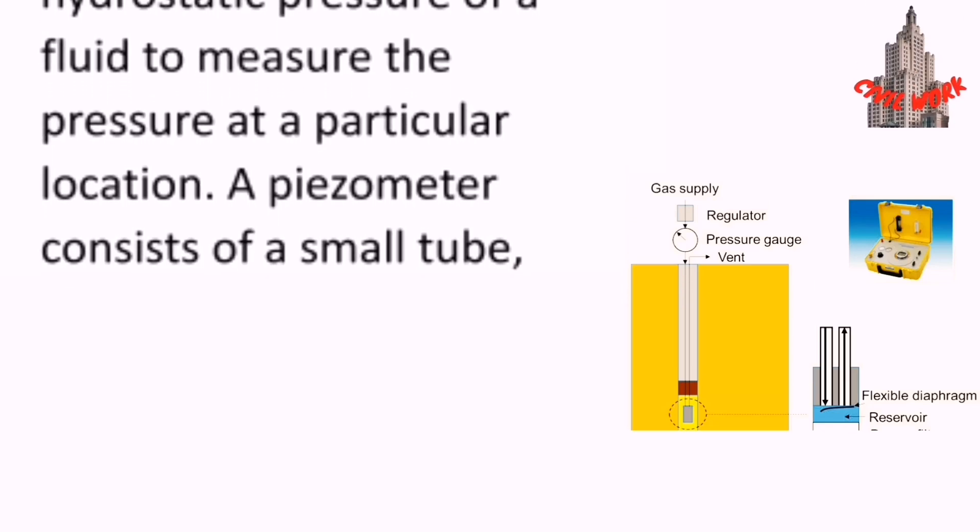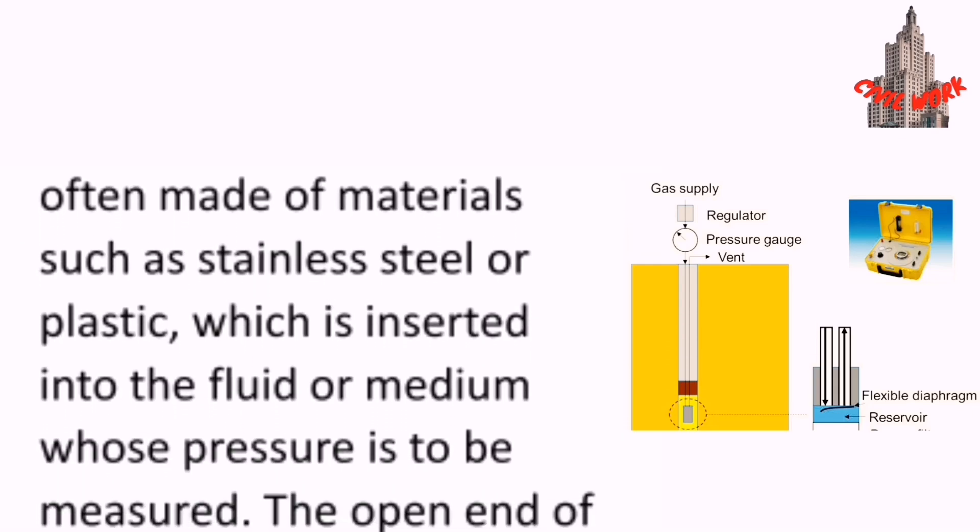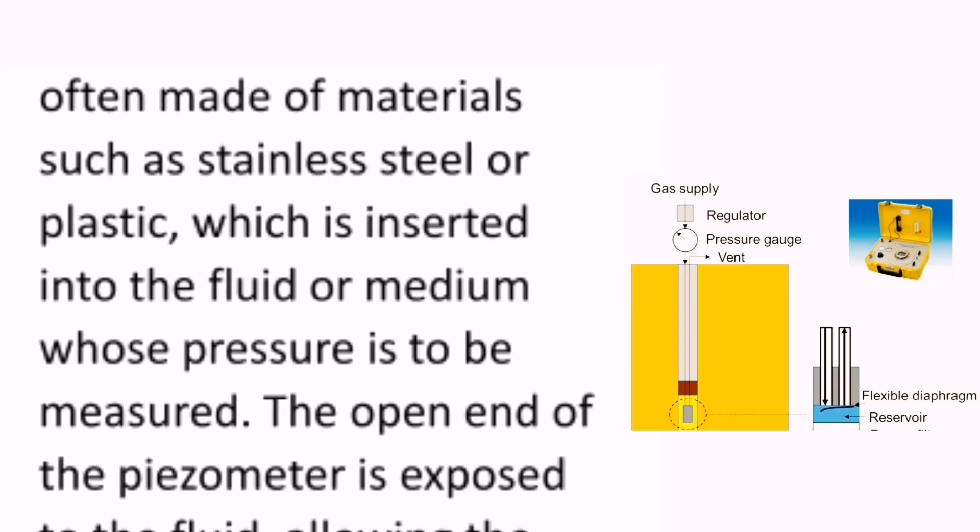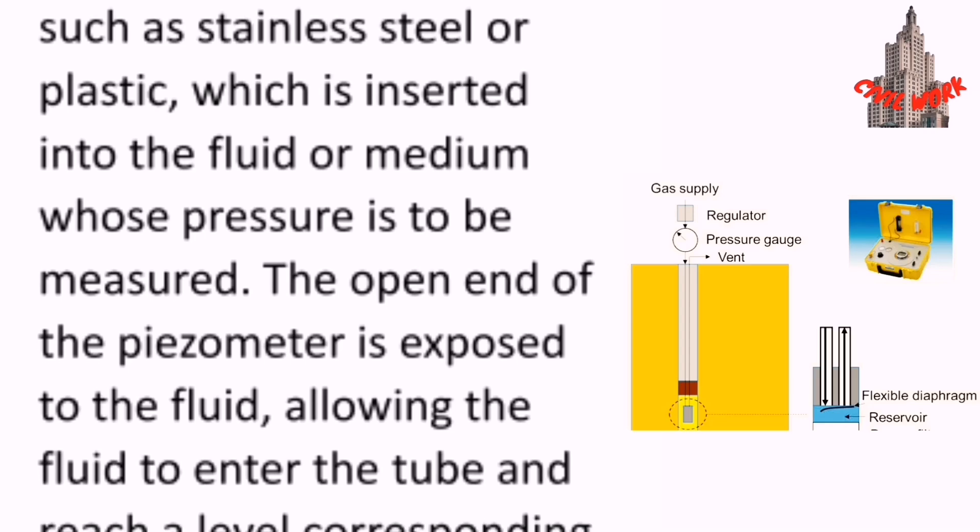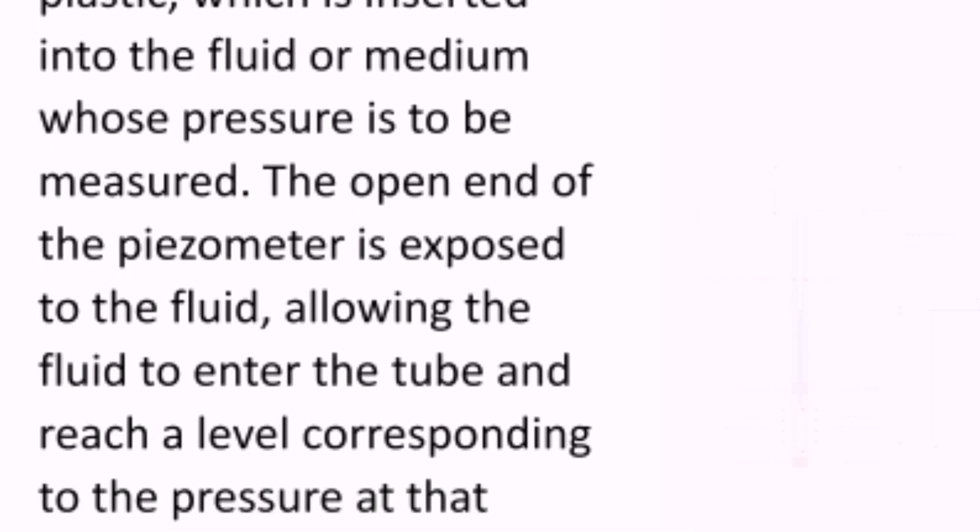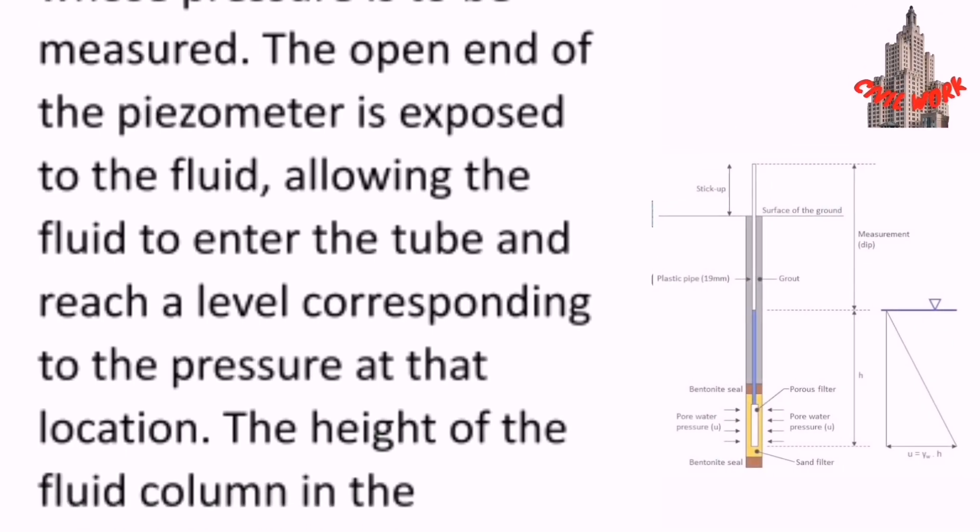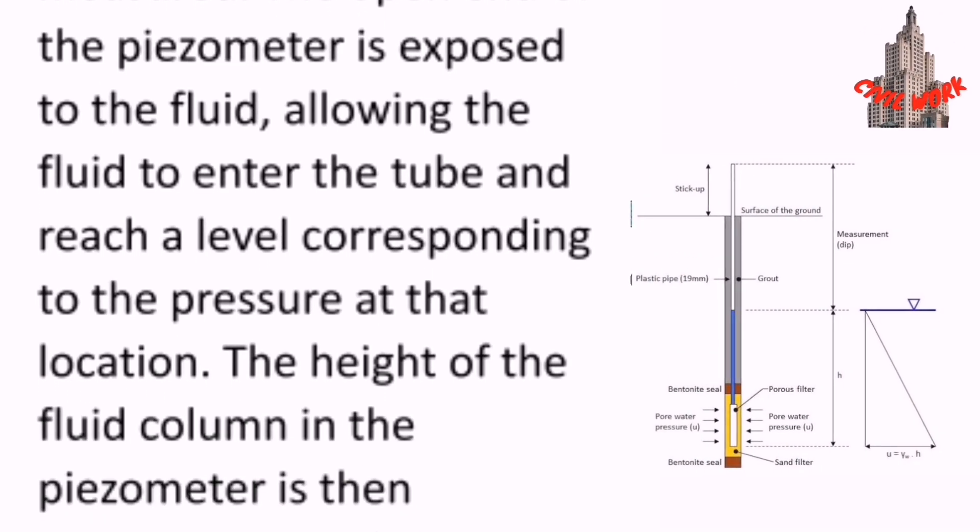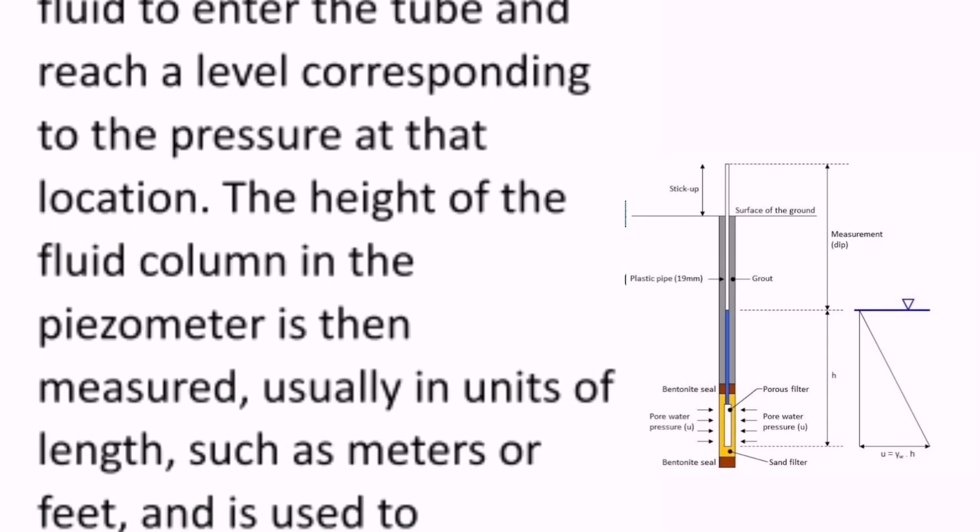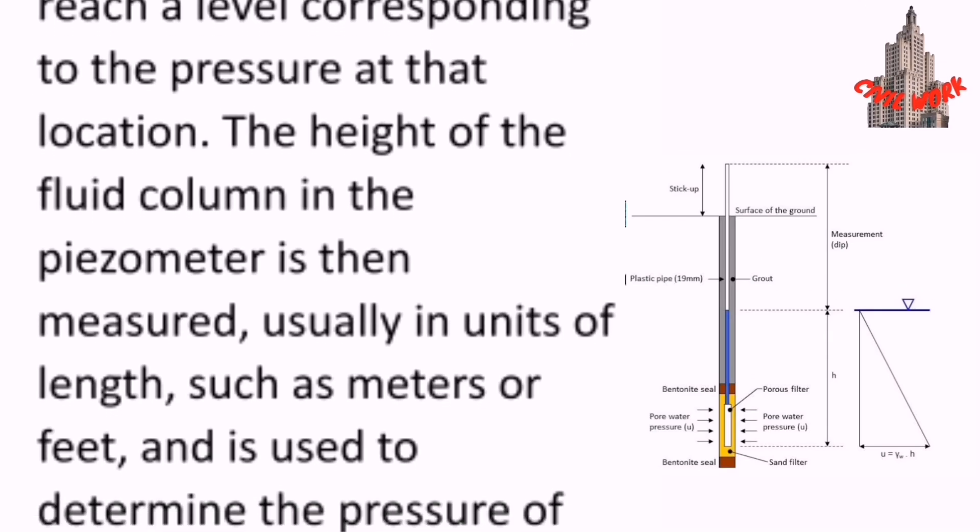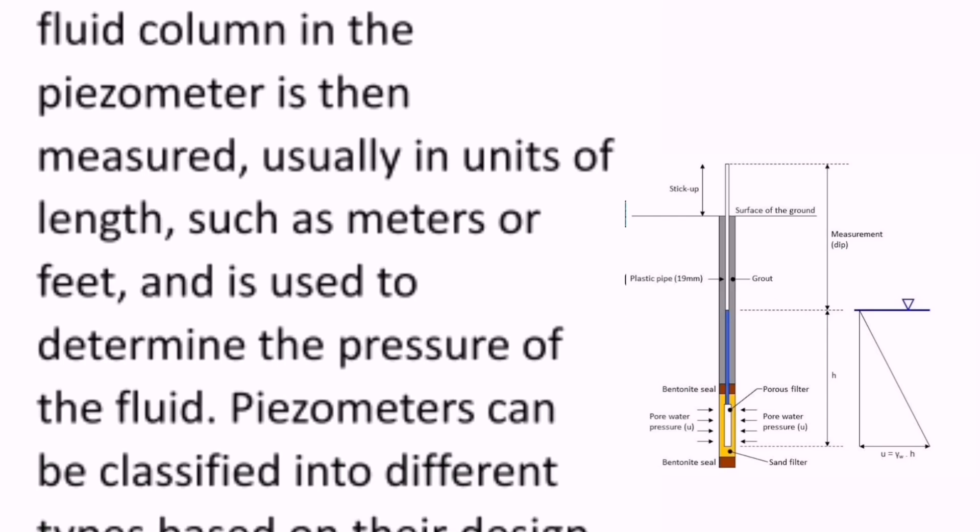A piezometer consists of a small tube, often made of materials such as stainless steel or plastic, which is inserted into the fluid or medium whose pressure is to be measured. The open end of the piezometer is exposed to the fluid, allowing the fluid to enter the tube and reach a level corresponding to the pressure at that location. The height of the fluid column in the piezometer is then measured, usually in units of length such as meters or feet.